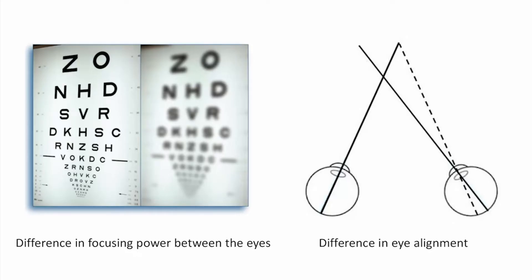This difference could be due to unequal focusing power between the two eyes, meaning that the brain receives a clear image from one eye but a chronically blurred image from the other. Alternatively, the two eyes might be misaligned so that the brain receives mismatched or decorrelated images from the two eyes.